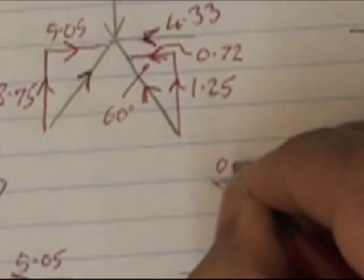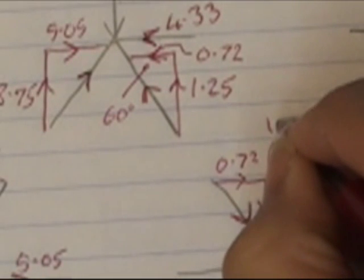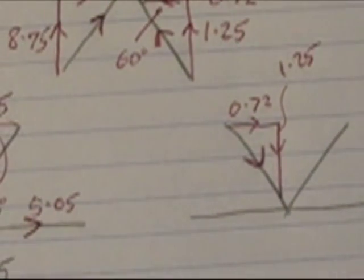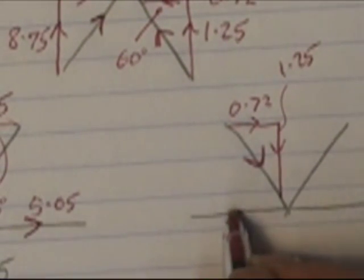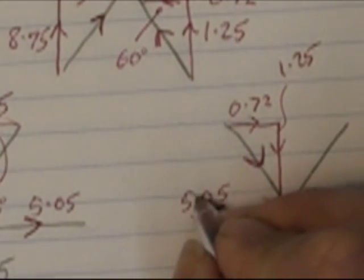Must be 0.72. And this one in here, 1.25. This one comes from this end. Must be going that way. 5.05.